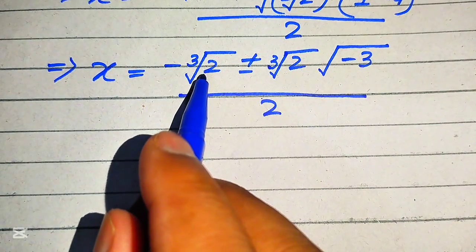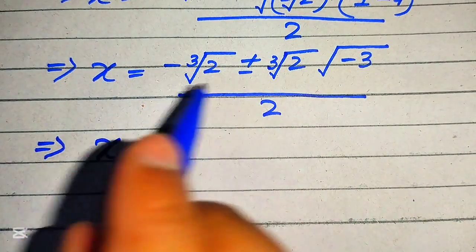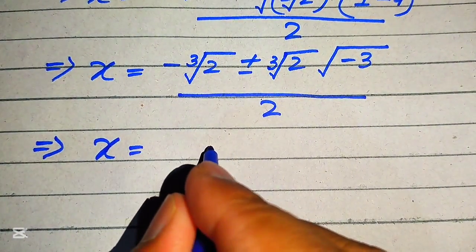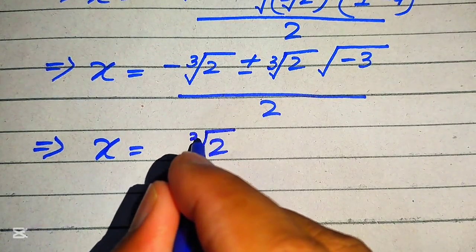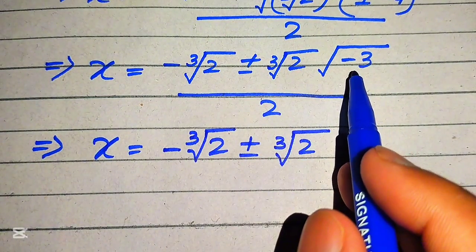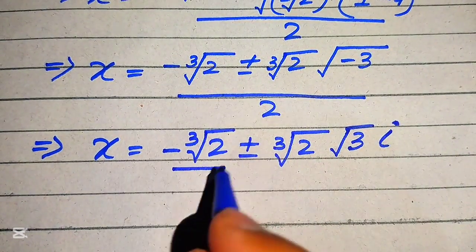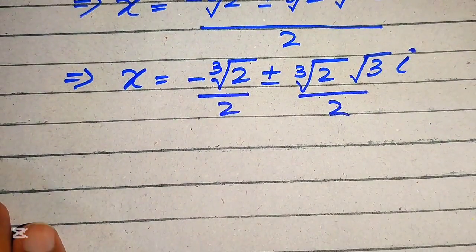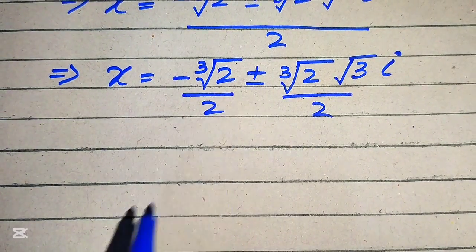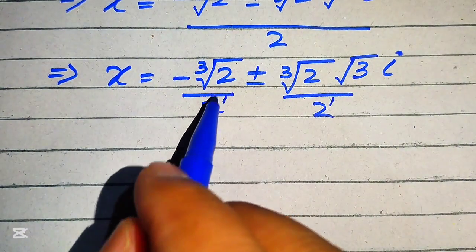Cube root of 2 is common in the numerator, so we break the fraction and write it as: negative cube root of 2 divided by 2, plus or minus cube root of 2 times square root of 3 times iota, divided by 2. The negative sign inside the square root introduces iota, so we get square root of 3 times iota. We can now apply each part separately.